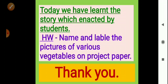Six students were there: First is Cabbage, Second is Rabbit, Third is Carrot, Fourth is Tomato, Fifth is Leafy Vegetable, and Sixth is Fox. Those students enacted this story. Today's homework is: name and label the pictures of various vegetables on project paper. Thank you, bye.